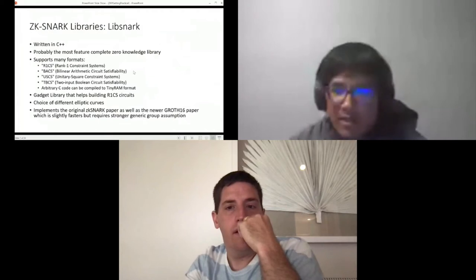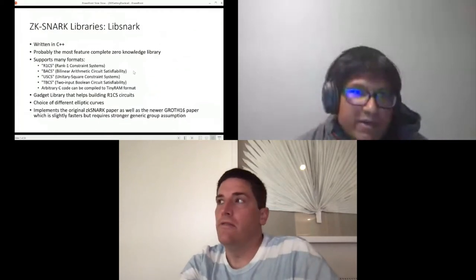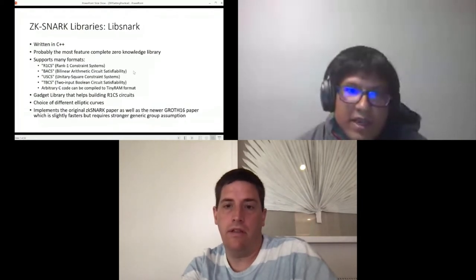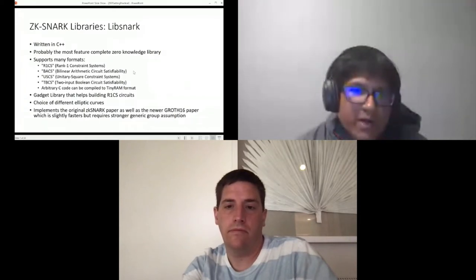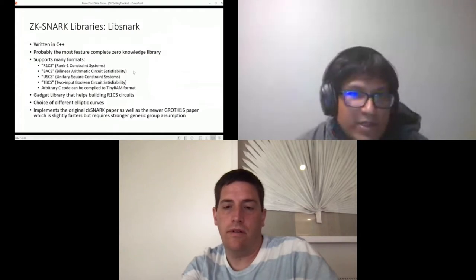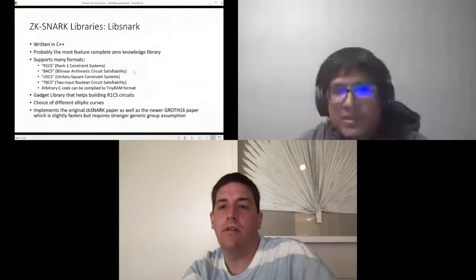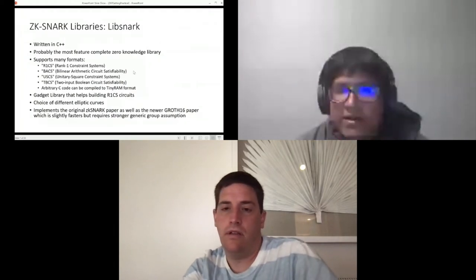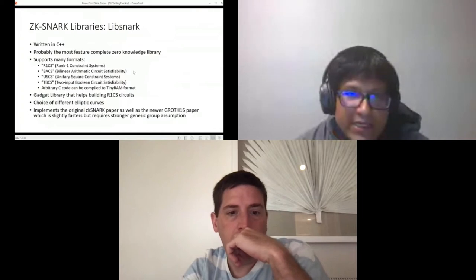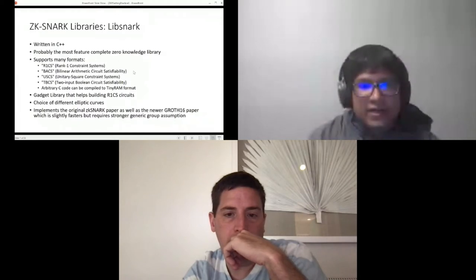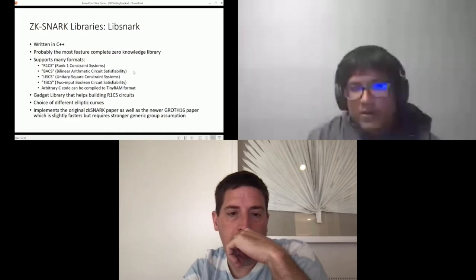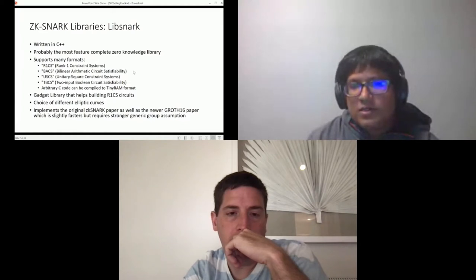Libsnark is the de facto zk-SNARK library. It is written in C++ and is actually probably the most feature complete zero-knowledge library available. It supports many formats such as R1CS, BSCS, USCS, TBCS, etc. You can also write arbitrary C code and that can be compiled to TinyRAM format which is supported by libsnark. It also has the gadget libraries that help building R1CS circuits. There are also choice of different elliptic curves and it implements the original zk-SNARK paper as well as the newer Groth16 paper which is slightly faster but requires stronger generic group assumptions.